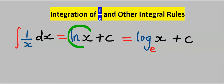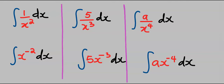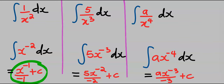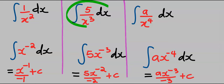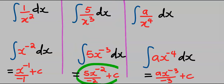The natural log of x is the same as log x of base e. If the x in the denominator has a power greater than 1, then we can rewrite the expression using negative exponent notation — both forms are the same — and integrate to obtain our answer.